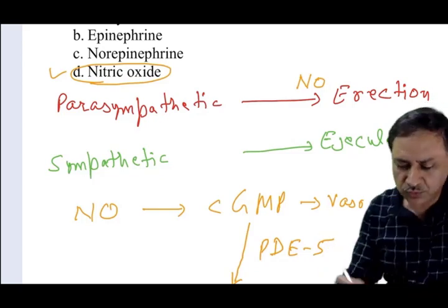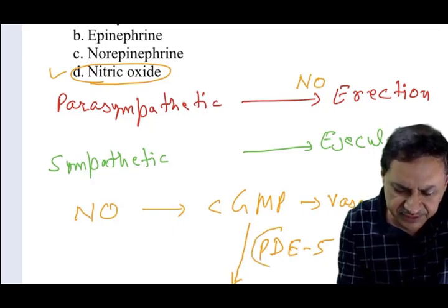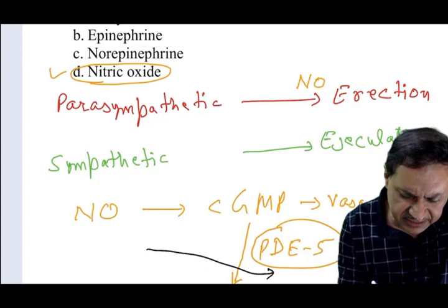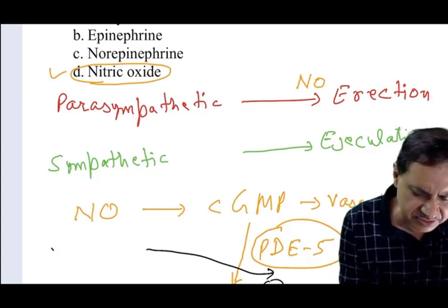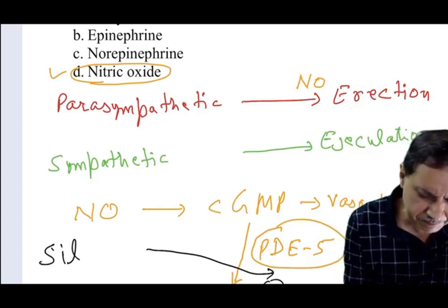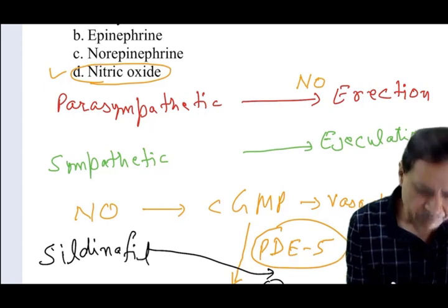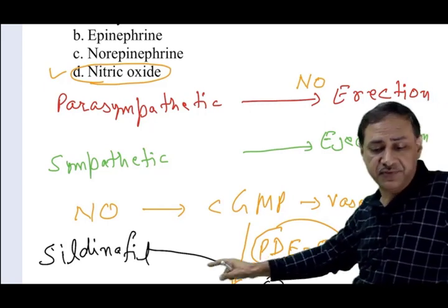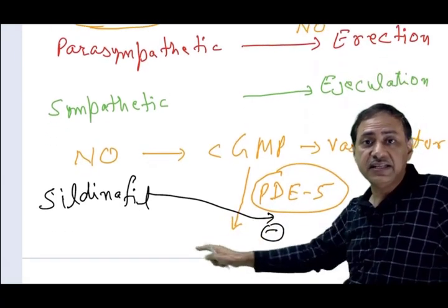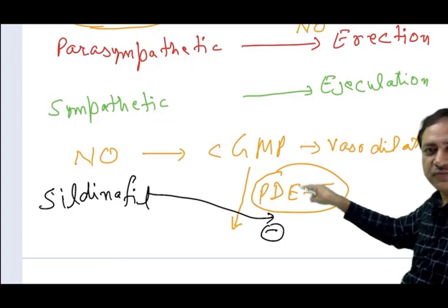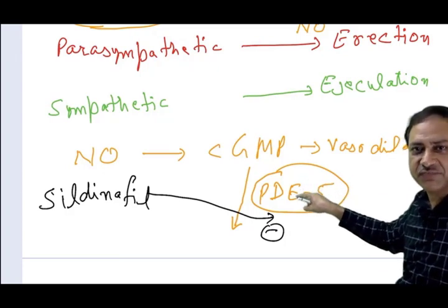This Phosphodiesterase V. This thing is inhibited by Sildenafil Viagra. Sildenafil is actually the inhibitor of Phosphodiesterase V. So if you will inhibit the Phosphodiesterase V by Sildenafil.